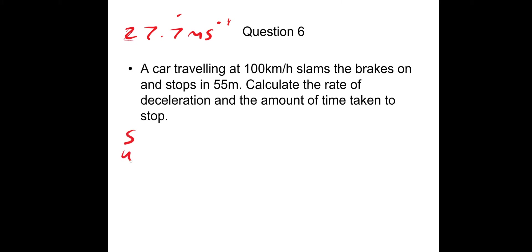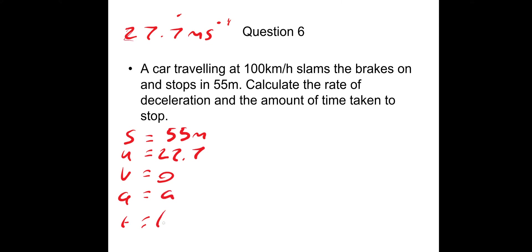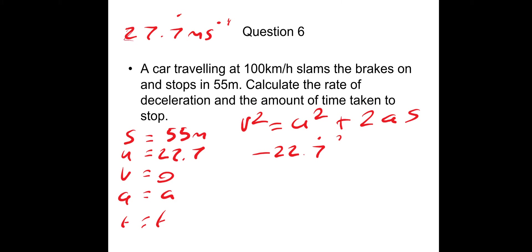Writing SUVAT: S is 55 meters, U is 27.7 recurring meters per second, V is zero (car stops), A is what we're looking for, and T we'll find next. Using V squared equals U squared plus 2AS, rearranged to A equals V squared minus U squared divided by 2S: that's minus 27.7 recurring squared divided by 110. This gives an acceleration of approximately minus 4.7 meters per second squared. The negative indicates deceleration, so the deceleration is 4.7 meters per second squared.